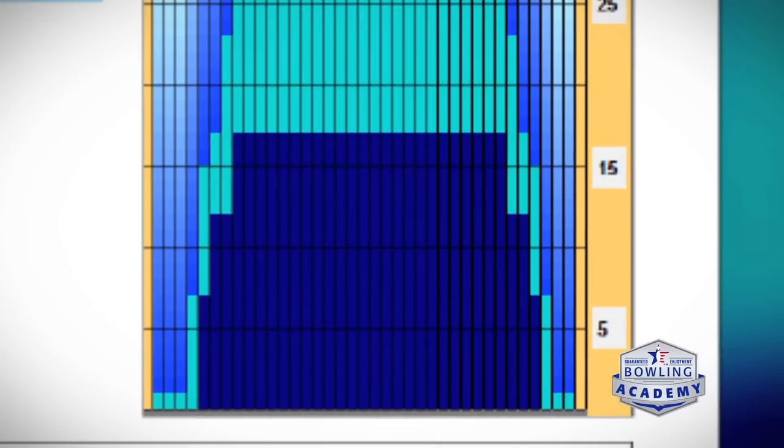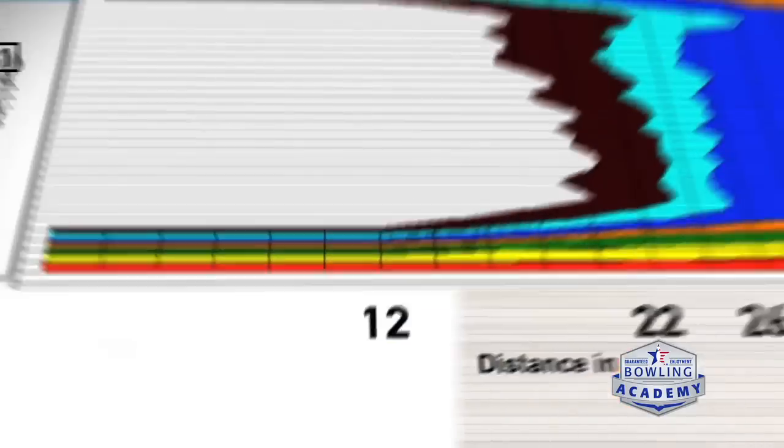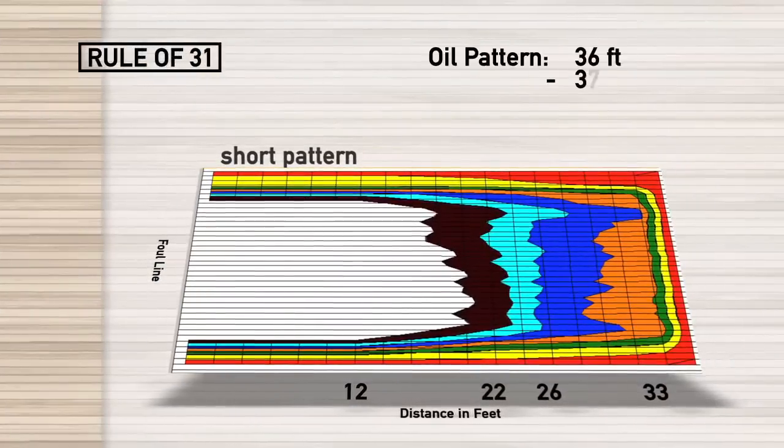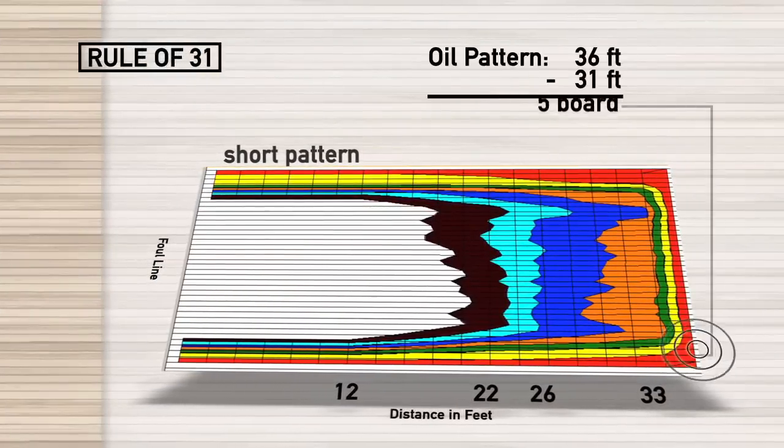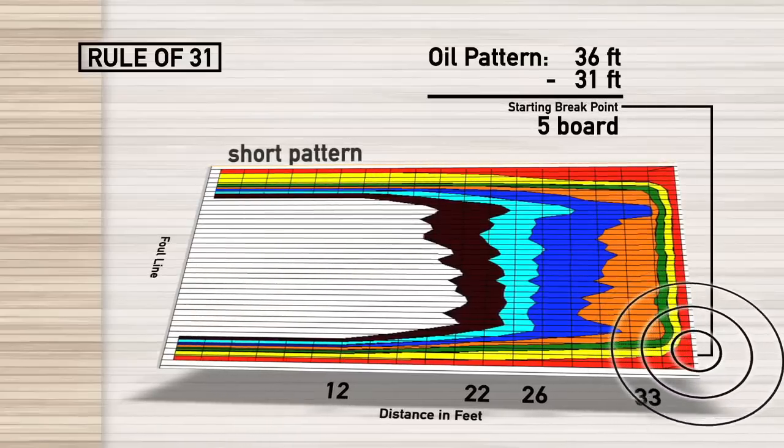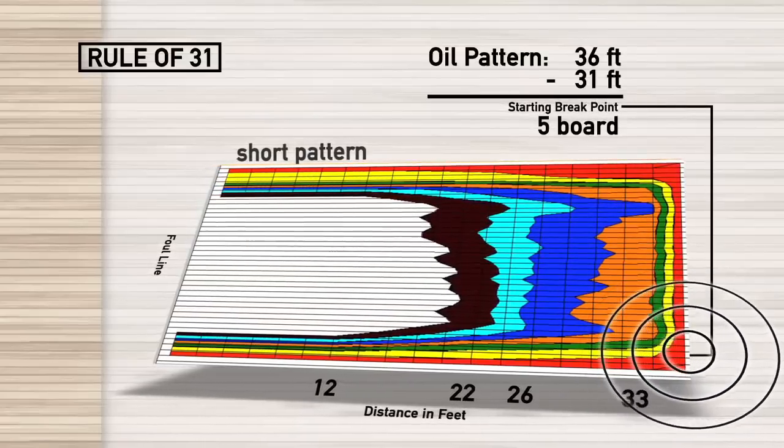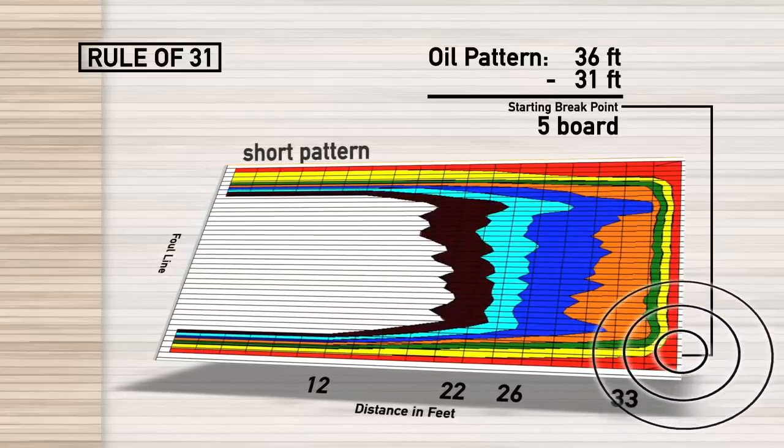This tells me two things. One, there's going to be quite a bit of oil in the front of the lane. And the 36 feet, this goes back to USBC's guide of 31. Your break point is going to be somewhere around the fifth board. Take the distance of the pattern, minus 31, kind of a general guideline.